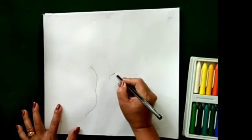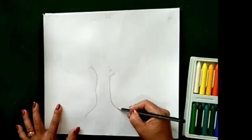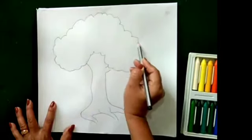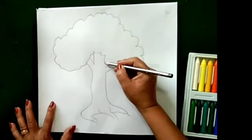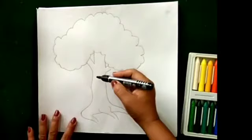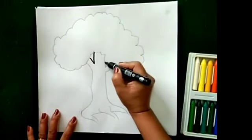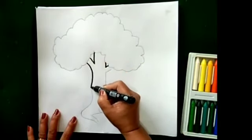First of all, draw a tree on a sheet and outline it with black sketch.